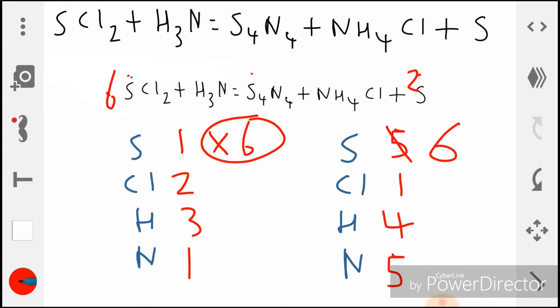So now we put six in front of the Cl2, we've got six. Now we've got two there, right? Two multiplied by six, therefore we now also have 12 chlorines here.